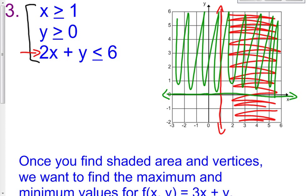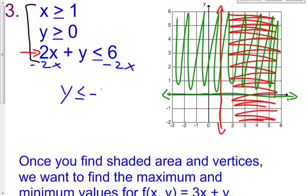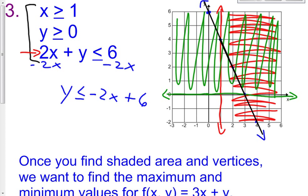For our last inequality, we have 2x plus y is less than or equal to 6. I'm going to change this into slope-intercept form by subtracting 2x. So now y is less than or equal to negative 2x plus 6. My y-intercept is at positive 6, and then my slope is down 2 over 1. I'll connect our points with a straight edge. If there's a third line, shade it diagonally.